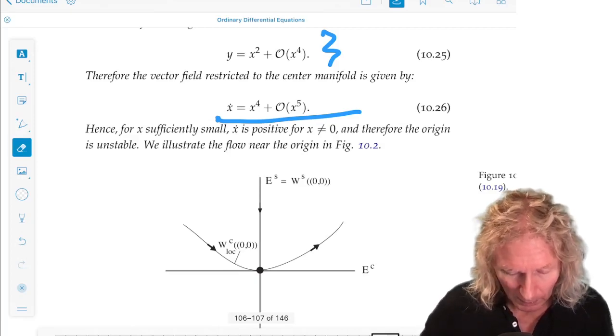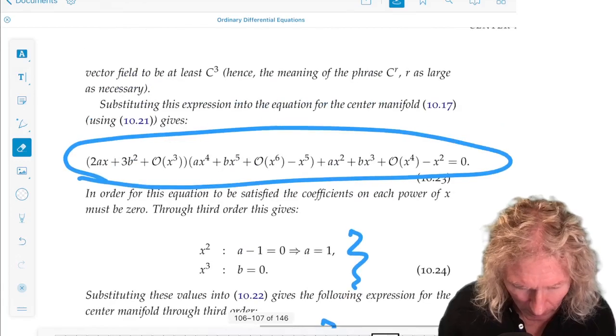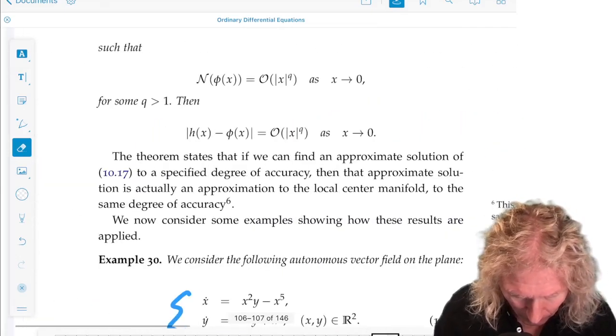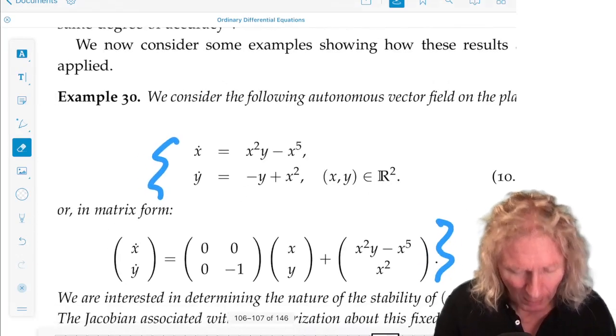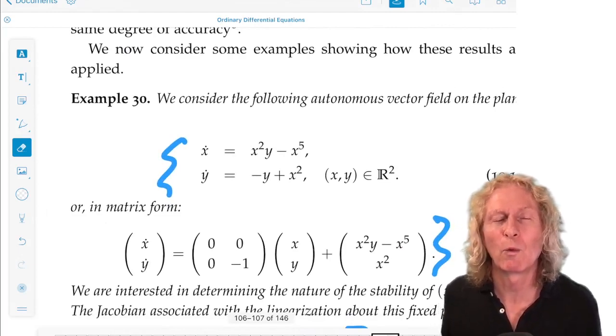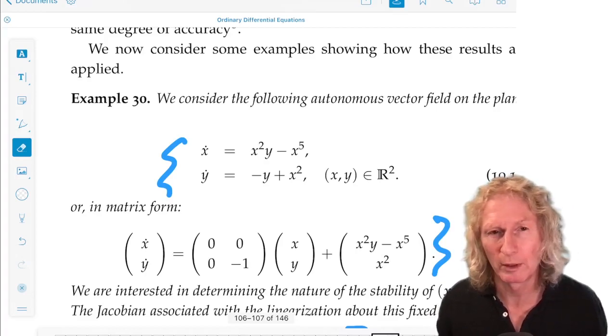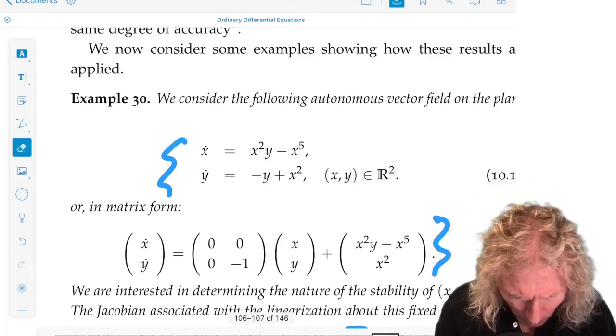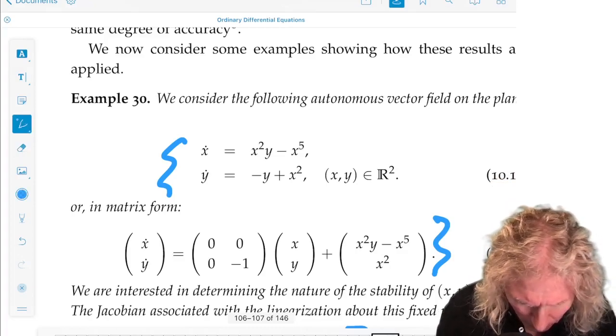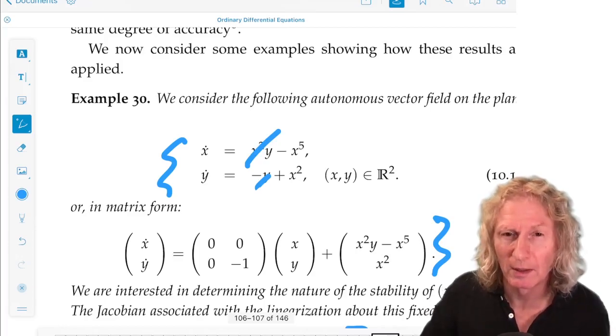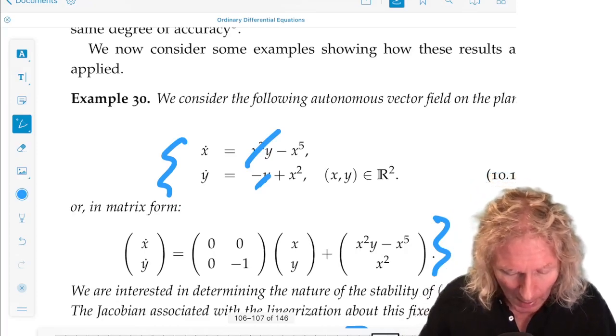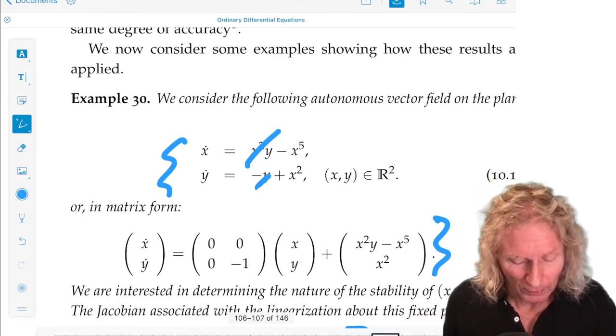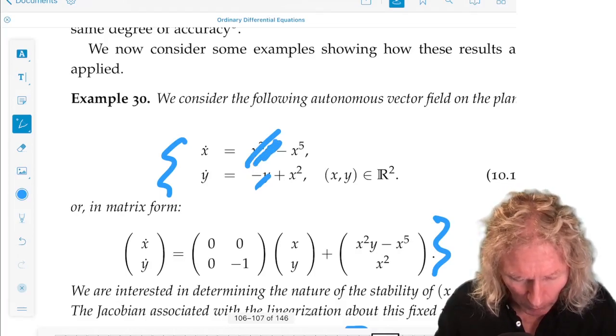Now, it's interesting. You could make the claim that, okay, the y components decay to zero exponentially fast. So why don't we just set y equal to 0? That's approximating the center manifold by the tangent space, the center subspace, which is tangent to the center manifold at the origin. Just set y equal to 0, and we're left with x dot equals minus x to the 5th.